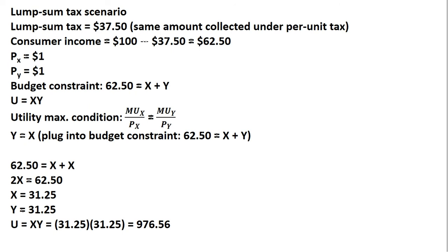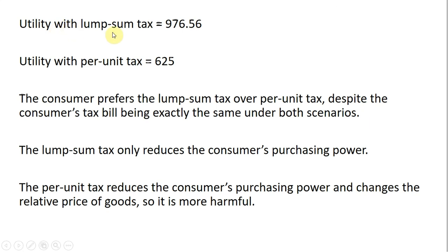To sum up, utility with the lump sum tax is 976.56, as we saw right here. Utility with the per-unit tax was 625. So the consumer prefers the lump sum tax over the per-unit tax, despite the consumer's tax bill being exactly the same under both tax scenarios. The lump sum tax, and the intuition behind this, is the lump sum tax only reduces the consumer's purchasing power. Whereas the per-unit tax reduces the consumer's purchasing power and also changes the relative price of good X and Y. So in that case, it is a little bit more harmful to the consumer. All right, I hope you found this video helpful.